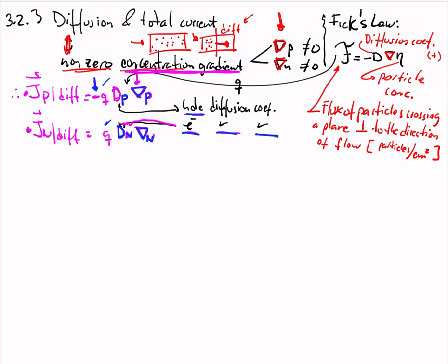Something not mentioned yet: the F in Fick's Law is the flux of particles crossing a plane perpendicular to the direction of particle flow, measured in particles per square centimeter.